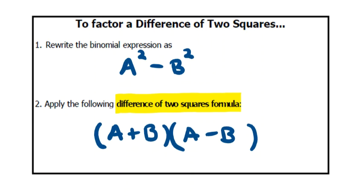So once you have that formula filled out with your expressions A and B, it's completely factored. Now of course, you want to check to make sure if you have a GCF beforehand, in which case that goes out first, and then you can apply the difference of two squares formula.